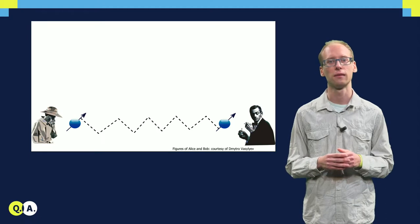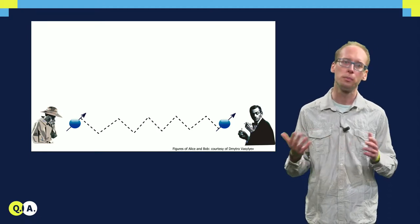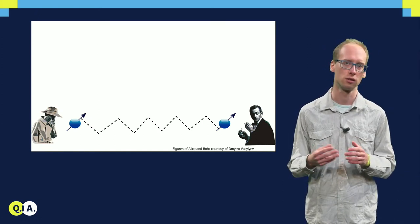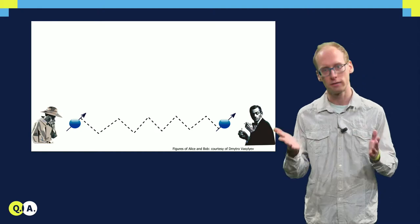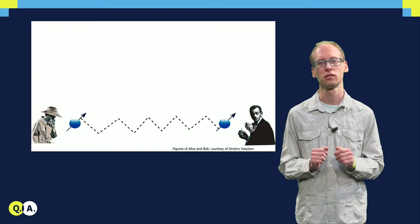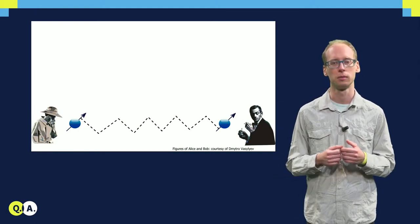Additionally, to overcome the problem of losses over such a long distance, there might be additional repeaters placed between Alice and Bob, which allow them to significantly increase the rate of generating those states. However, such repeater nodes perform additional imperfect operations, which further decrease the quality of the resulting entanglement between Alice and Bob.